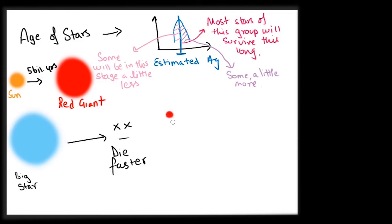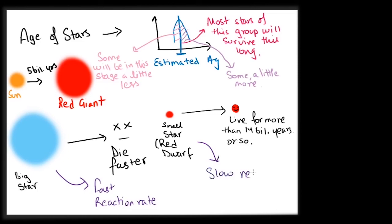On the other hand, red dwarfs use fuel so slowly we have never observed a red dwarf die and their estimated age is longer than the known age of the universe that is 13.8 billion years.